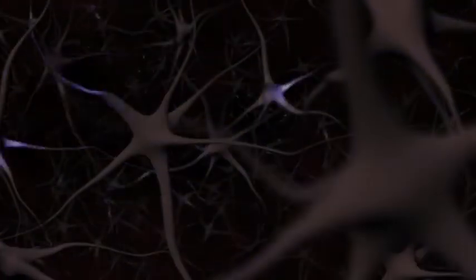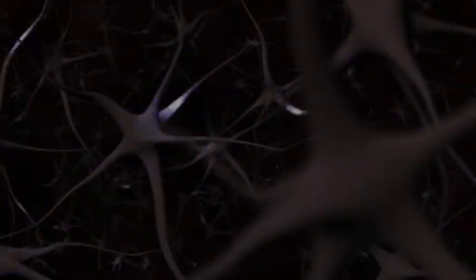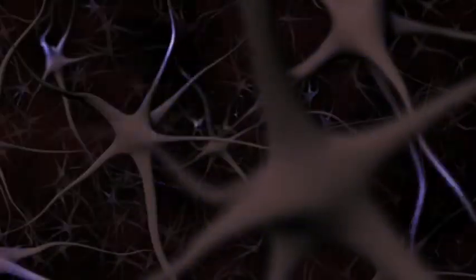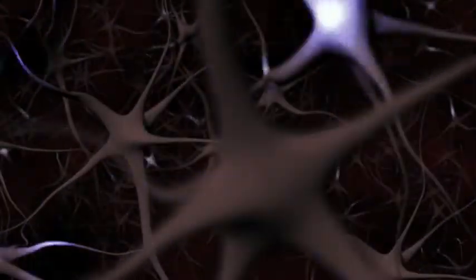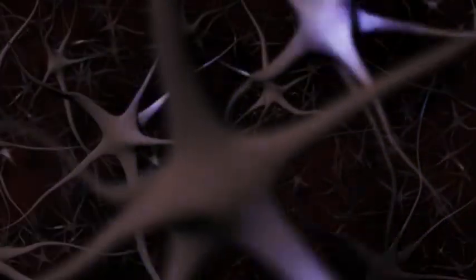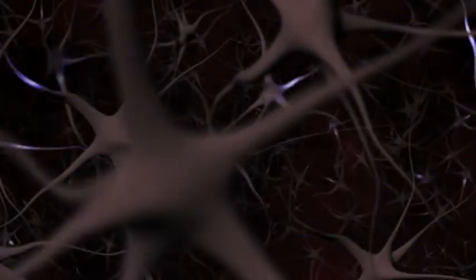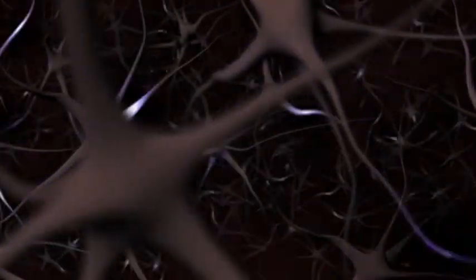The human brain contains more than a hundred billion neurons. Just like a single ant could never build an anthill, a single neuron can't think or feel or remember. The neuron's power is a result of its connections to other neurons.